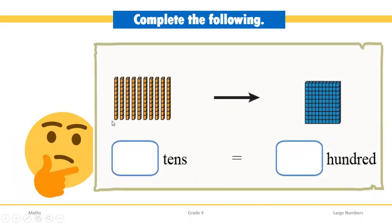Next, we have large blocks made up of 1 ten, 2 tens, 3 tens, 4, 5, 6, 7, 8, 9, 10. These sticks are each made up of 10 blocks. So 10 tens, when counted and joined together, will be equal to 100.